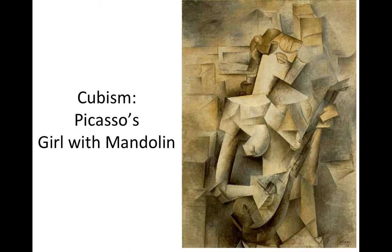Pablo Picasso was a major innovator in Cubism. Cubism takes this notion of relativism even a step further, and it also takes art to an even higher level of abstraction. Here is Picasso's Girl with Mandolin. Cubism is an art form that depicts objects — in this case a woman holding a mandolin — from a multitude of viewpoints at once. You can connect this with the notion of relativism, that everything is dependent on the perspective of the viewer.